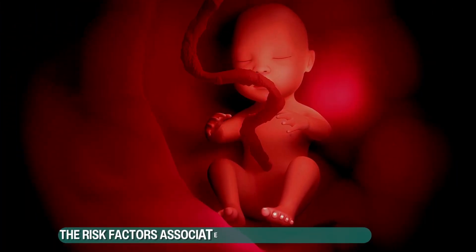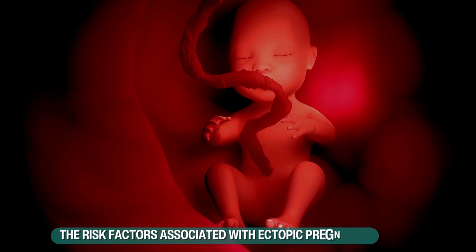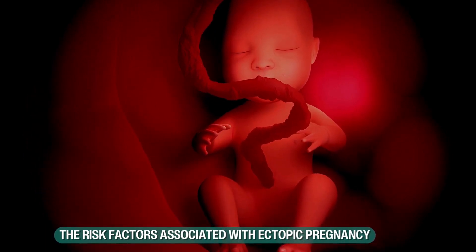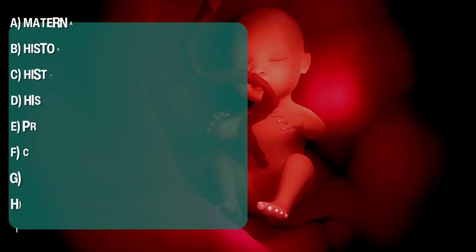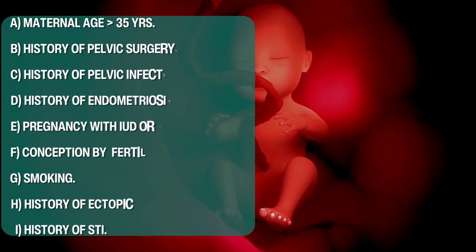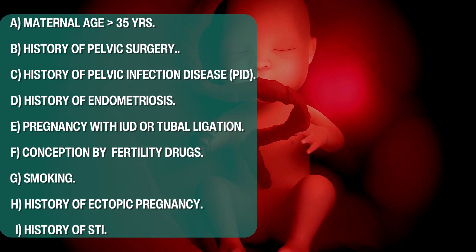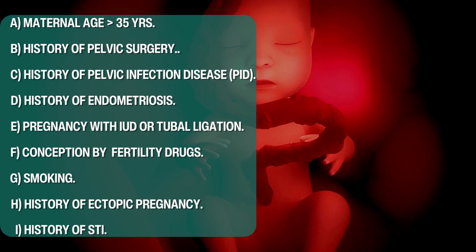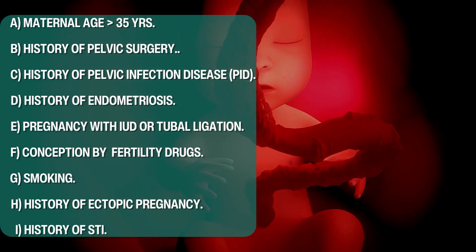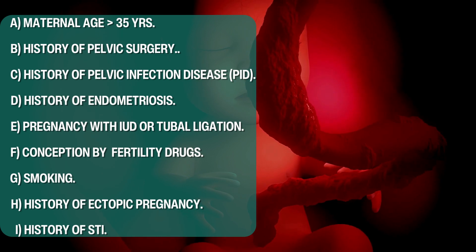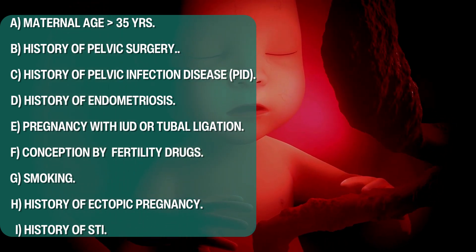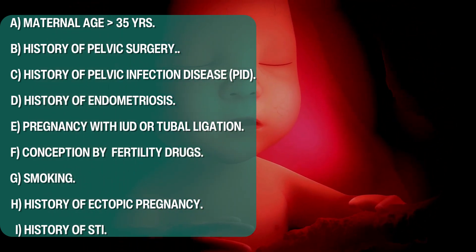Medical conditions may also be associated with ectopic pregnancy if they affect the shape and condition of the fallopian tube or any reproductive organ. Important risk factors include maternal age — especially above 35 years — and a history of pelvic surgery, such as surgery for endometriosis, surgery for ovarian cysts, or surgery for any inflammatory condition in the pelvis, including appendix surgery.